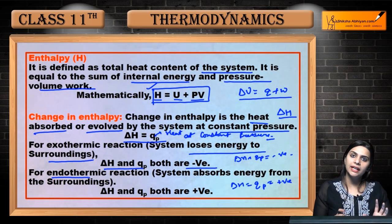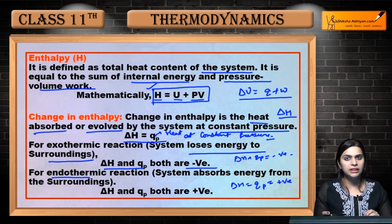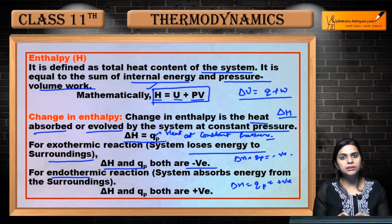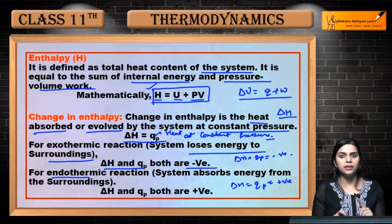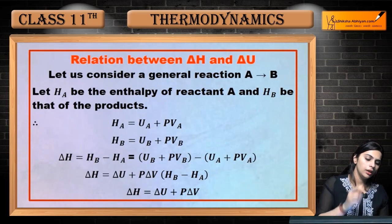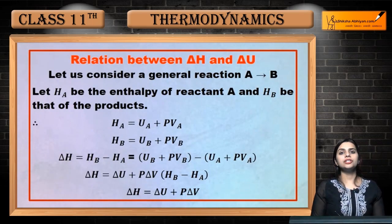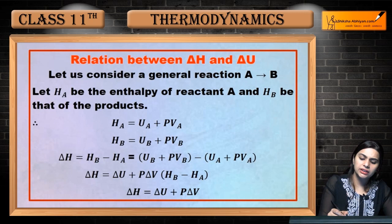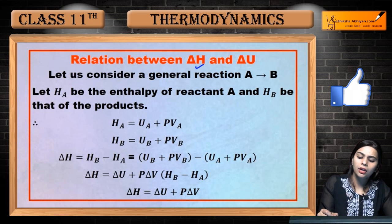Toh enthalpy kya hoti hai? Kisi bhi system ki jo heat hai use hum enthalpy kehte hain. Change in enthalpy ΔH se represent karte hain. Aur enthalpy ko mathematically represent karte hain: H = U + PV, where PV is work. Ab hum ΔH aur ΔU mein relation dekhenge.